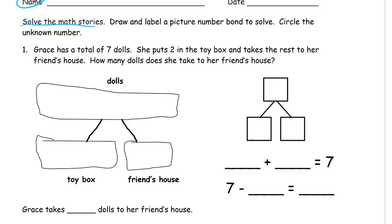We're solving math stories. You have to draw and label a picture number bond to solve. Circle the unknown number. The unknown number — there's going to be usually two numbers that we'll know and one that we don't know. That's usually the one we have to count to figure out. You might know your parts of 10 or parts of 5 and use those. The known ones are the ones they tell you, and the unknown ones are the ones you have to figure out.